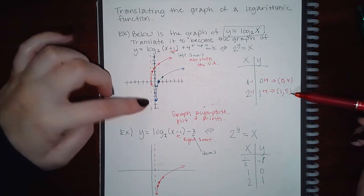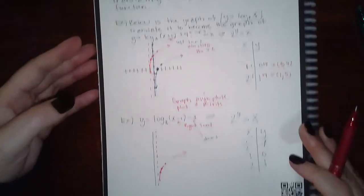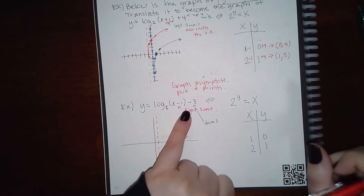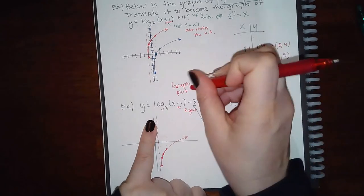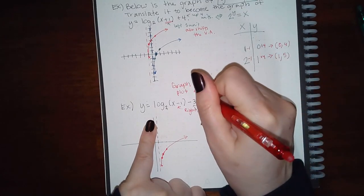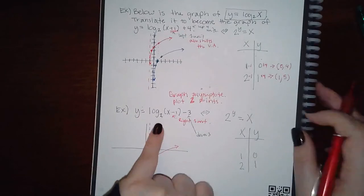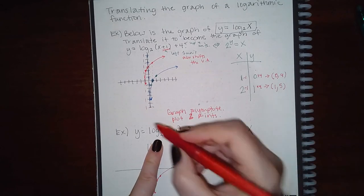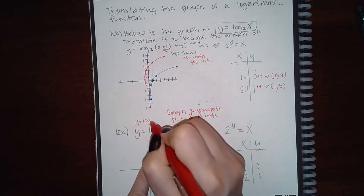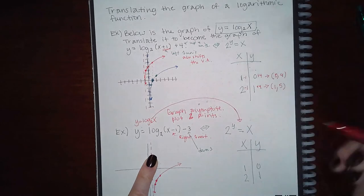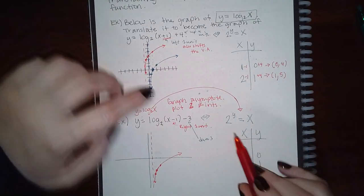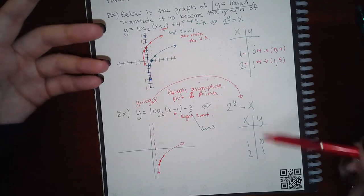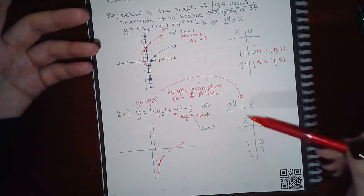The same procedure applies to the next problem, which has the same directions but a different function. The problem says graph the asymptote and then plot two points. Again, I convert the original parent function — log base 2 of x — into exponential form: base 2, with x and y switching sides. Plugging in 0 for the exponent gives x = 1, and plugging in 1 gives x = 2.